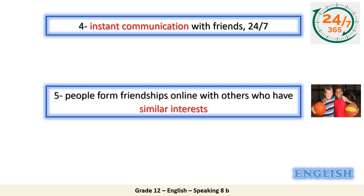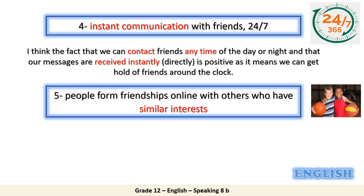Please take time to work on the last two points and then come to this model. For number four: instant communication with friends 24/7. Some may say: the fact that we can contact friends any time of the day or night and that our messages are received instantly — which means directly — is positive, as it means we can get hold of friends around the clock.